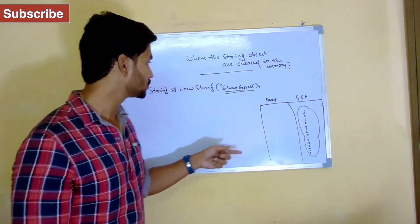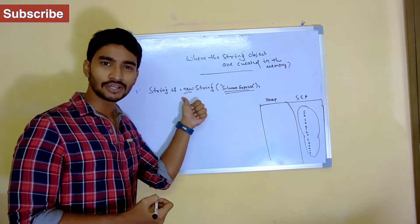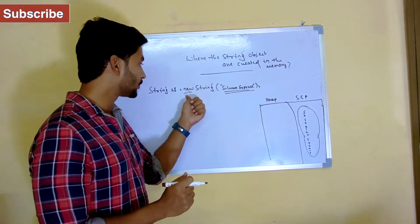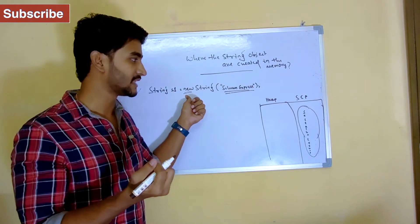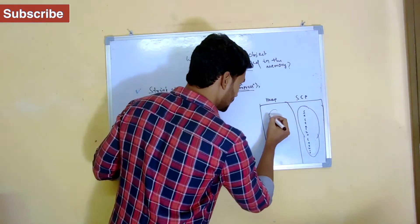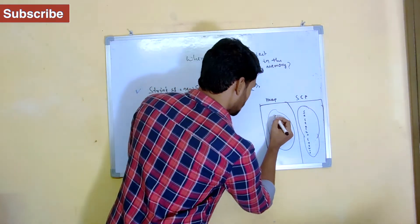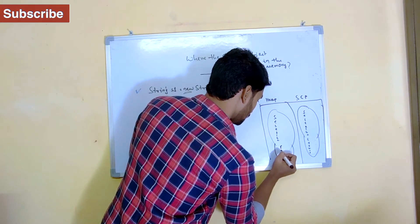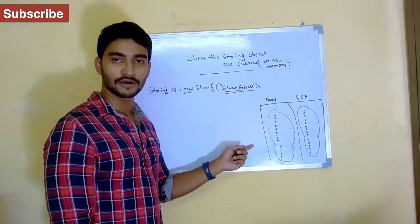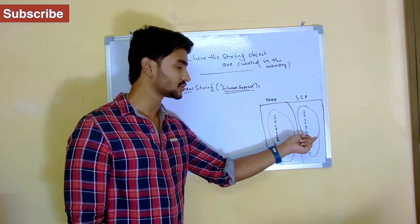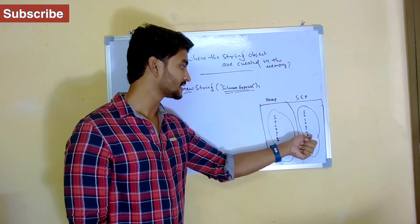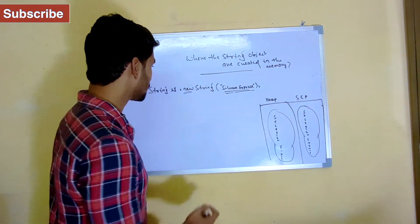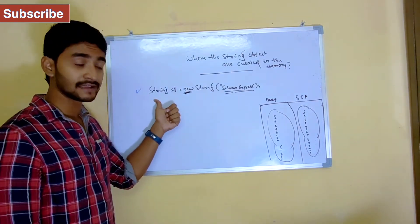The next thing JVM is going to do is create another object — why? Because you're trying to create an object using the new keyword. Using new keyword means you are creating the object at runtime, and whenever a runtime operation is happening, JVM is also going to create an object in the heap memory with the same content, Selenium Express. So two different objects have been created.